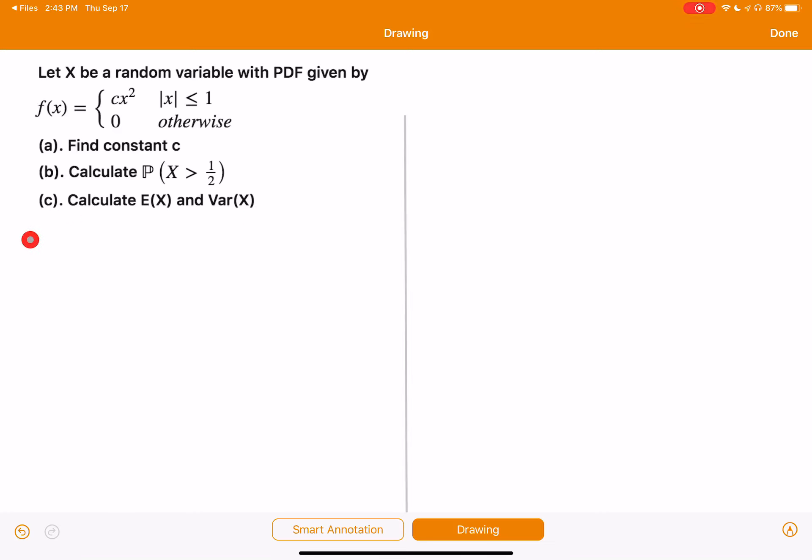Let's start with a. To make f a density function, the integral of f must be equal to one. And f is equal to this function and x is ranging from negative one to positive one.